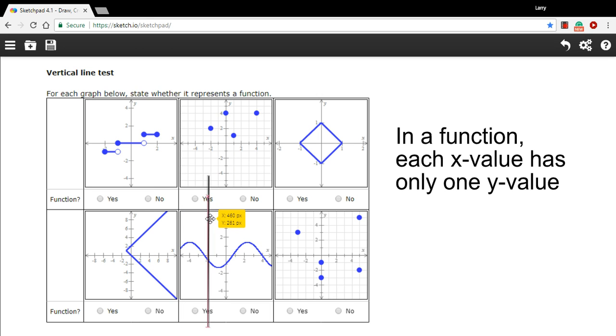This one looks like a trigonometric function. As I move the vertical line through, I can't make it intersect in more than one point. So that one looks like it passes.